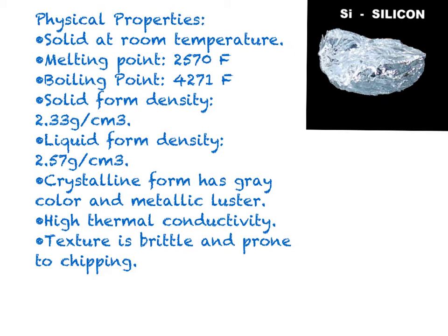Silicon is a solid at room temperature, and the freezing and melting points are the same at 2,570 degrees Fahrenheit. The boiling point is 4,271 degrees Fahrenheit. Silicon's density is greater in liquid form than in solid form, so it does not contract when it freezes, but instead expands. In solid form, the density is 2.33 grams, and in liquid form, the density is 2.57 grams. In its crystalline form, it has a gray color and metallic luster, and it has high thermal conductivity.